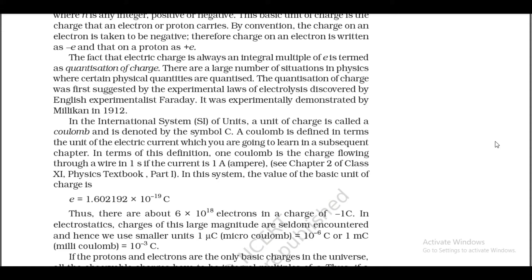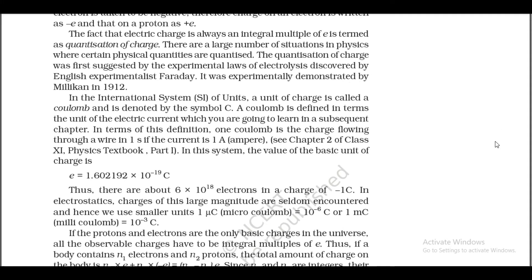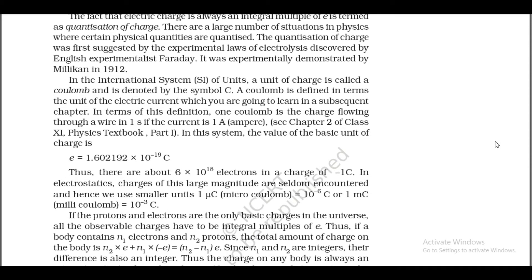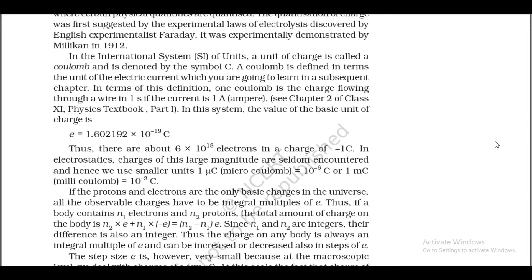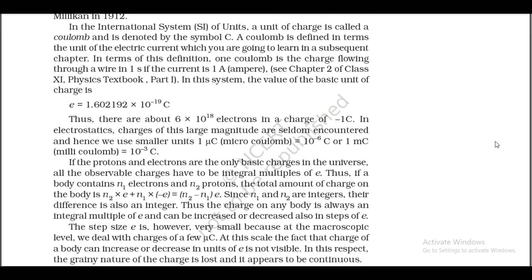In the SI system, the unit of charge is called a coulomb, denoted by C. A coulomb is defined in terms of the unit of electric current. One coulomb is the charge flowing through a wire in 1 second if the current is 1 ampere. The value of the basic unit of charge is e = 1.602192 × 10⁻¹⁹ coulomb. Thus there are about 6 × 10¹⁸ electrons in a charge of −1 coulomb. In electrostatics, charges of large magnitude are seldom encountered; hence we use smaller units: 1 microcoulomb = 10⁻⁶ C, 1 millicoulomb = 10⁻³ C.